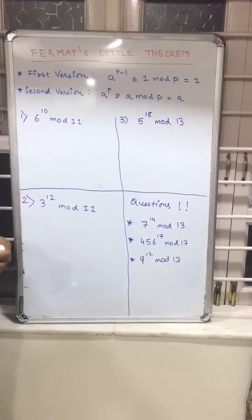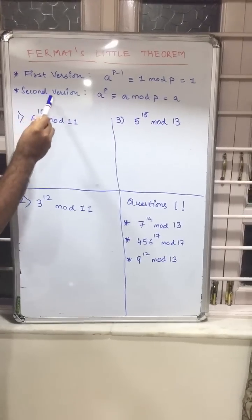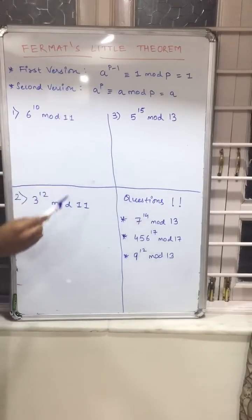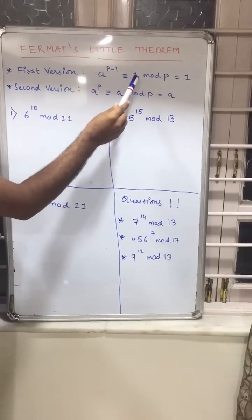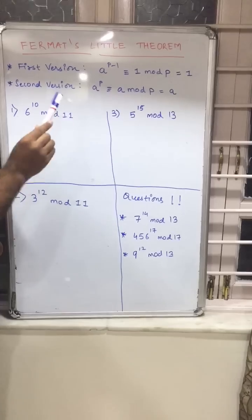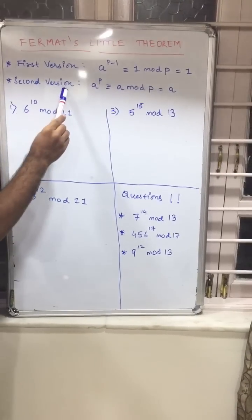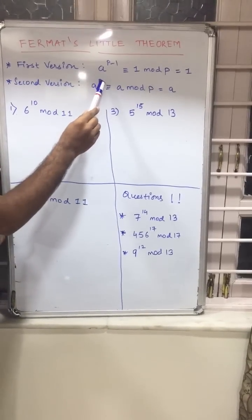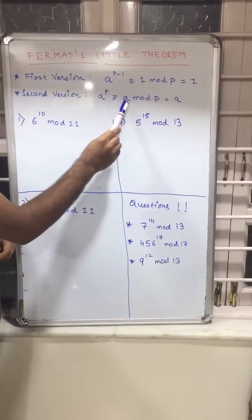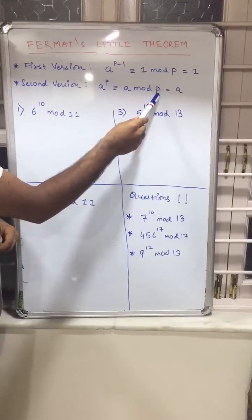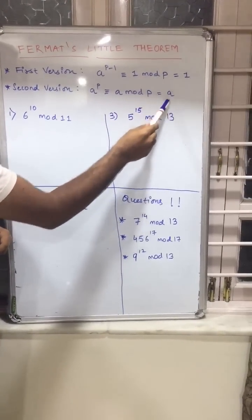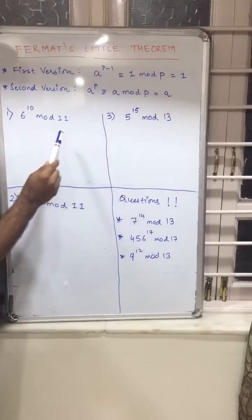Fermat stated basically two versions, first and second. First version says that a raised to p minus 1 is congruent to 1 mod p where p is any prime number. Second version states that a raised to p is congruent to a mod p where p is again prime number. I'll come to this one later on while solving this sum.